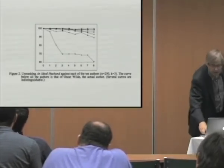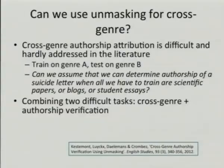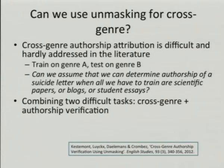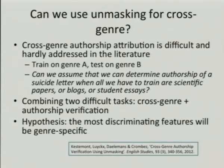You see here 'An Ideal Husband' as the target text, and a number of different authors who could have written it. The declining curve is Oscar Wilde, who indeed wrote this book, and all the others are the imposters — they stay at the same level. The study we did was to combine the two most difficult issues currently: verification instead of attribution, and cross-genre instead of single-genre authorship attribution, in a paper that appeared recently in the journal English Studies in a special issue on authorship attribution.